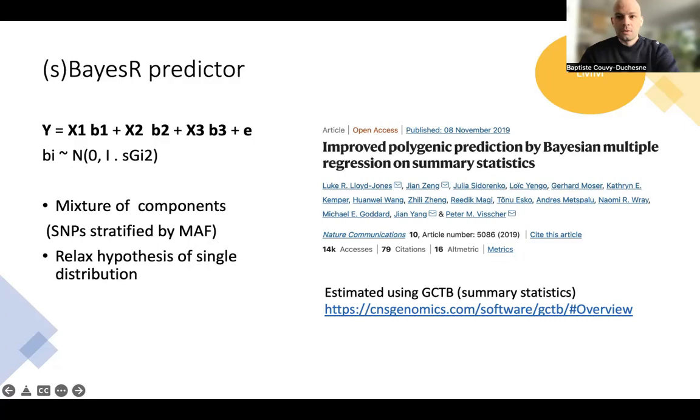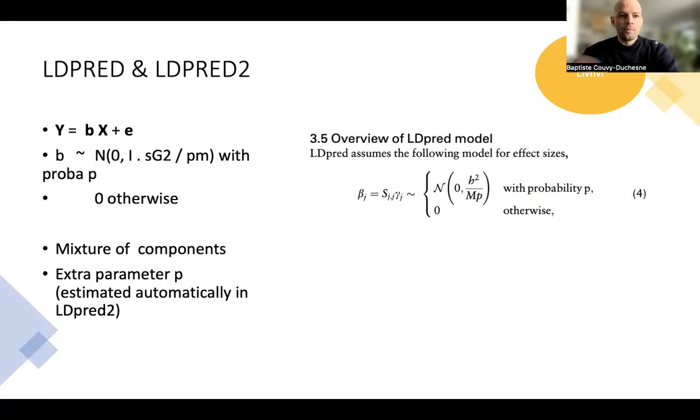Another fairly advanced model which you probably have heard about is this LD-PRED or LD-PRED2 model. We can still write the model under this simple form Y equals Xb plus e, except that b here is a randomly distributed random effect variable, but only with a probability p and it takes a zero value otherwise. So in practice, this means that we have a mixture between a random effect distribution on b and then just a zero above zero. This is a bit closer to the true model in which we would have a set of causal SNPs p and then all the non-causal SNPs have an association of zero.